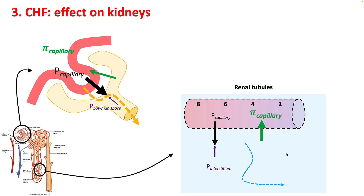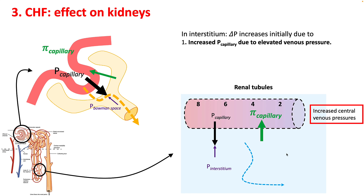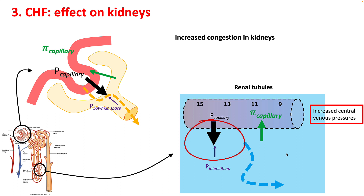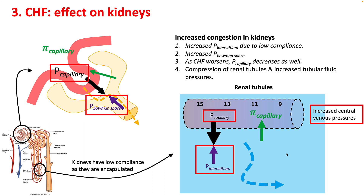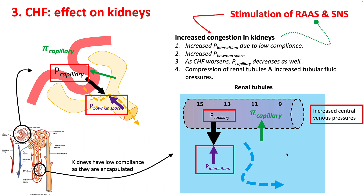In the kidneys, the effect of Starling forces is felt by Bowman's capsule and the renal tubules. Because of increased central venous pressure, there is more congestion, increasing the hydrostatic gradient, which raises interstitial pressure in the kidneys. This is also transmitted to your Bowman's space, counteracting the filtration pressure from the capillaries. Congestion results in compression of renal tubules and increased tubular fluid pressures, which stimulates the renin-angiotensin system, further resulting in salt and water retention.